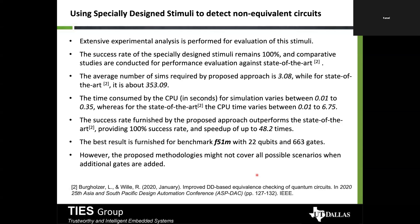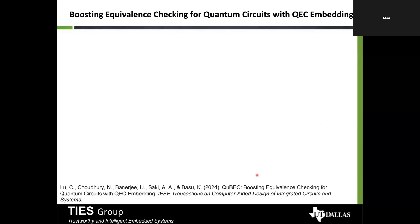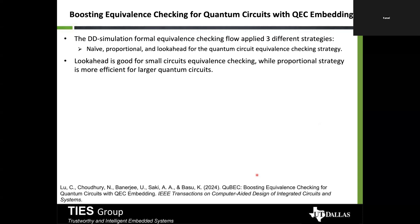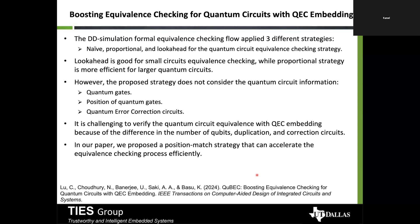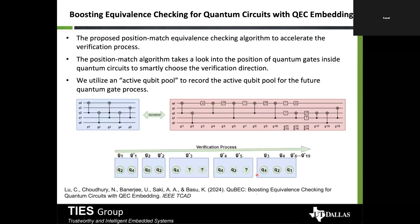The last part discusses quantum equivalence checking based on QEC embedding. Traditional decision diagram methods have three approaches — naïve, proportional, and look-ahead. Look-ahead is good for small circuits while proportional is more efficient for larger ones. However, these strategies do not account for the positions of quantum gates or whether a QEC (quantum error correction) circuit is embedded in the quantum circuit. Since the circuit is static and fully available, you can look far ahead and make better decisions.